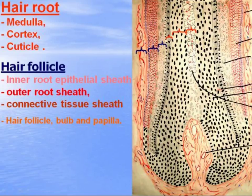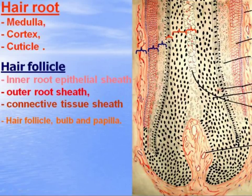This figure shows the hair root in greater detail. The hair consists of medulla, cortex, and cuticle in the periphery. The hair follicle consists of an inner epithelial sheath, outer epithelial sheath, and connective tissue sheath, which continues into the connective tissue hair papilla. The bulb contains the stem and proliferating cells.